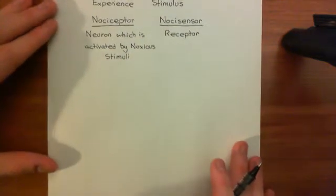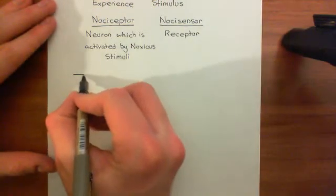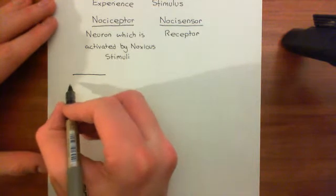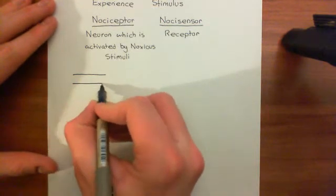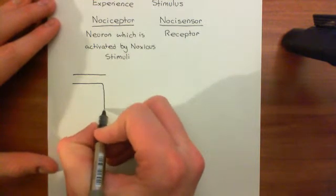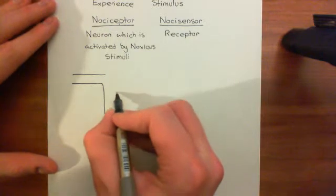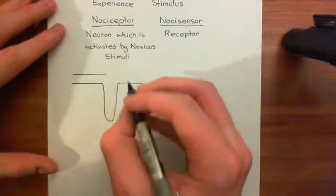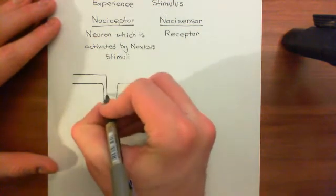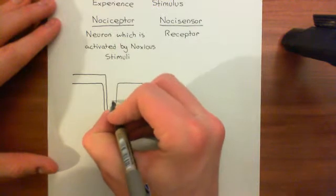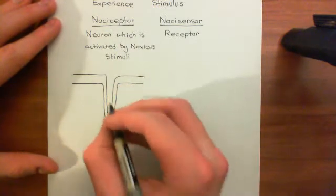We're going to begin with a little bit of a reminder of the structure of the skin. Basically, the skin starts with the epidermis. The epidermis is the outermost layer of the skin. The epidermis sort of invaginates in a little bit and has hair follicles from time to time. So this is an invagination inwards — this is going to be a hair follicle.